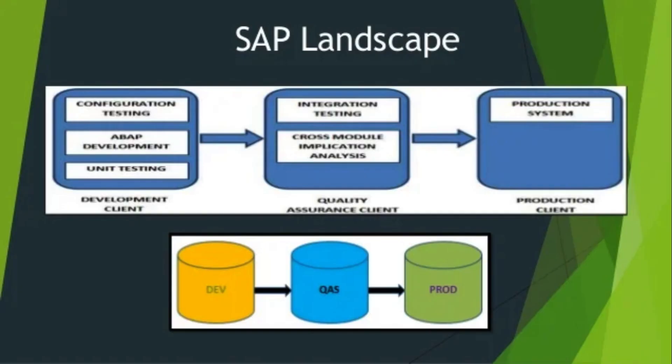SAP Landscape refers to the arrangement of SAP servers. It typically includes development, quality assurance, and production servers, which support the lifecycle of an SAP application from development to deployment.